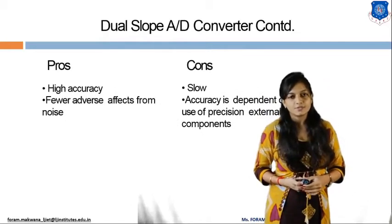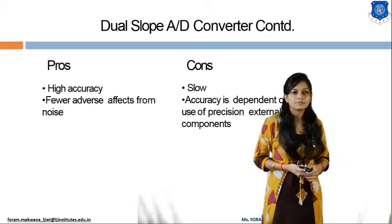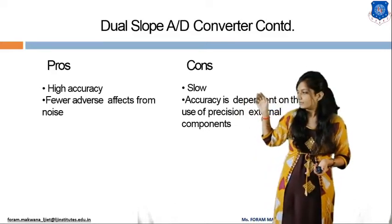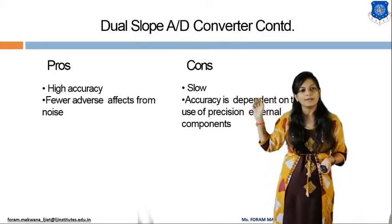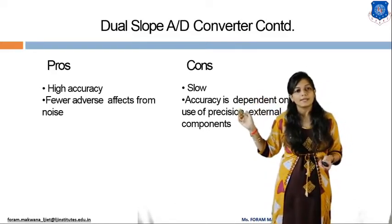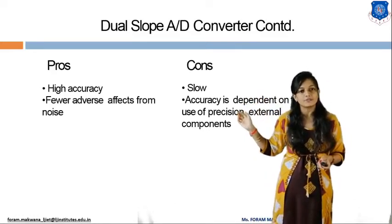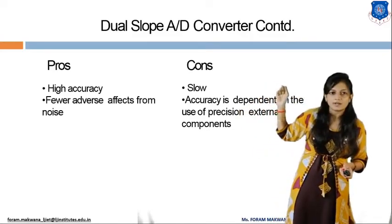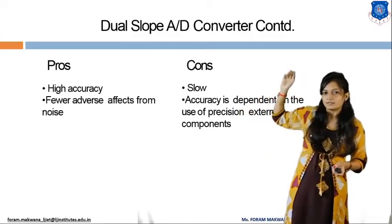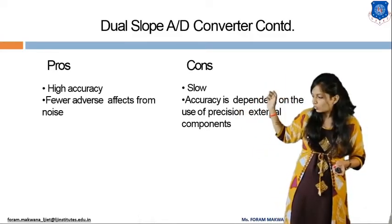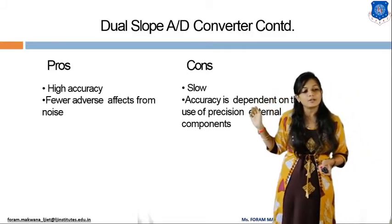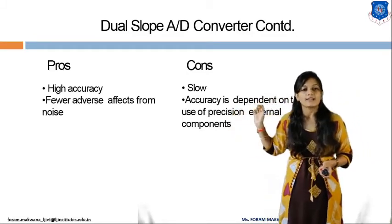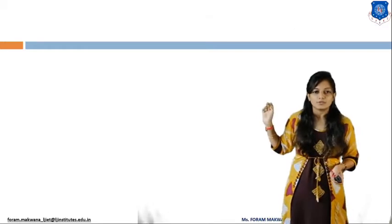The next type is the dual slope ADC. It is highly accurate and has fewer adverse effects from noise. However, its accuracy is dependent on the use of external components.